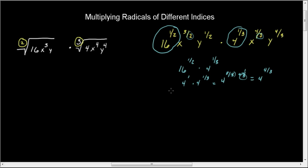So the common denominator is going to be 6 in that case. So if I were to write this out, this would be 16 to the 3 sixths x. And instead of 3 halves, it would be multiplied by 3 on top and bottom. This would be 9 sixths. And then y to the 3 sixths times 4 to the 2 sixths. This would be x to the 8 sixths. And then y to the 8 sixths.